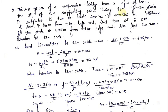Now let us do the second question on the 2-hinged stiffening girder. The 2-hinged girder of a suspension bridge has a span of 100 meters, with the dip of the supporting cable being 10 meters. So the total span l = 100 meters and the dip h = 10 meters. The girder is subjected to two point loads: 200 kN and 400 kN at distances of 20 meters and 80 meters from the left end. Find the shear force and bending moment for the girder at 25 meters from the left end, and also find the maximum tension in the cable.